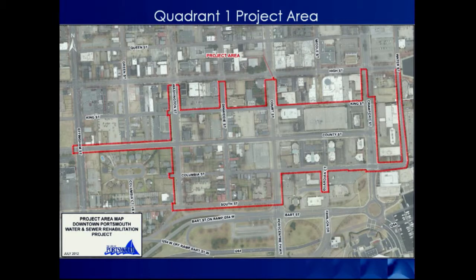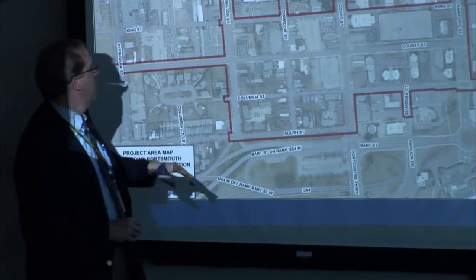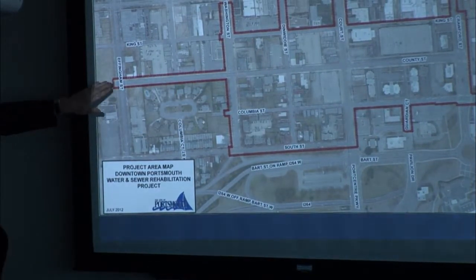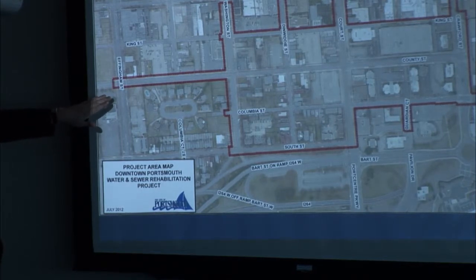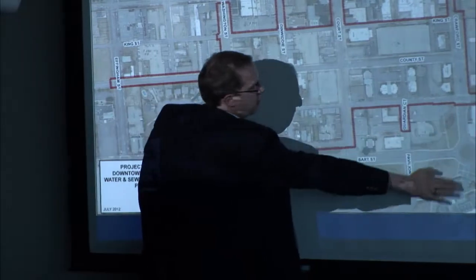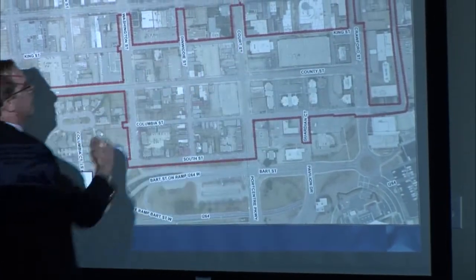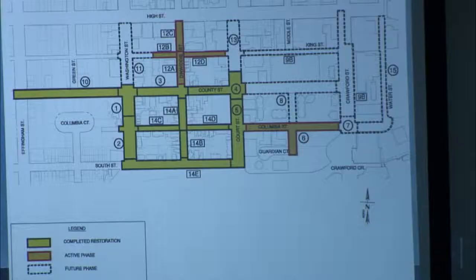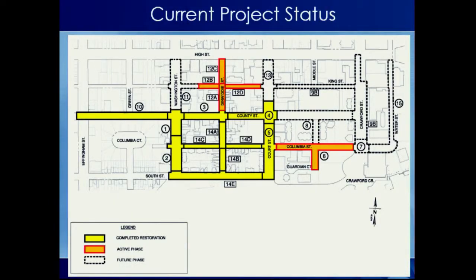Like Mr. Rowe said, we divided the downtown master plan into four main quadrants. This is the quadrant one project area — generally east of Washington, although we did do County Street all the way down to Effingham because that's where we connected to the HRC force main. Here at the bottom is City Hall and Telos, Crawford, the old jail, and we're south of High Street. The yellow areas are areas that are complete, including all pipe work, pavement, and sidewalks.